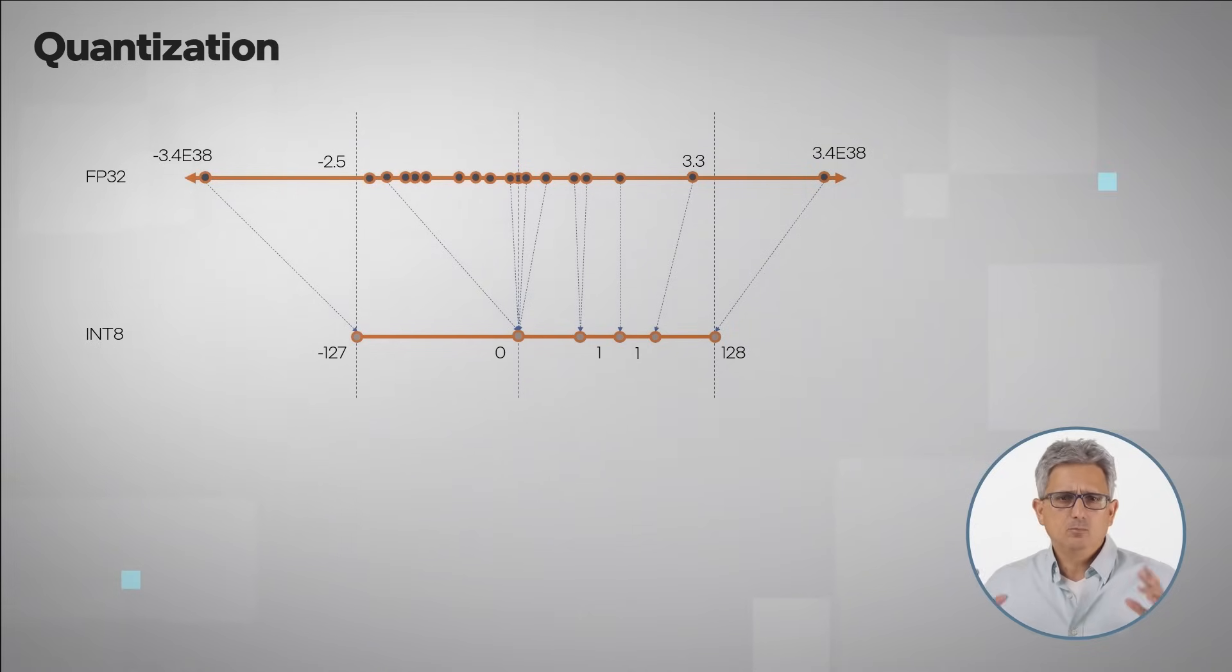OpenVINO tools can perform all kinds of quantizations. Basically taking model parameters represented in floating point wide range and quantize them to a smaller range. Here for example from ±10 to the power of 38 at floating point 32 to ±127 in int 8. This will significantly reduce the model size and help improve the performance.